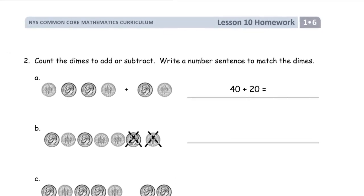Now, second page, counting the dimes to add or subtract. Write a number sentence to match the dimes. So you can see the first one, we have an example. There's four tens, that's the 40. Plus, there's our plus. Two tens, that's the 20. And what is it? The total, the whole thing is 10, 20, 30, 40, 50, 60, if you count them all.